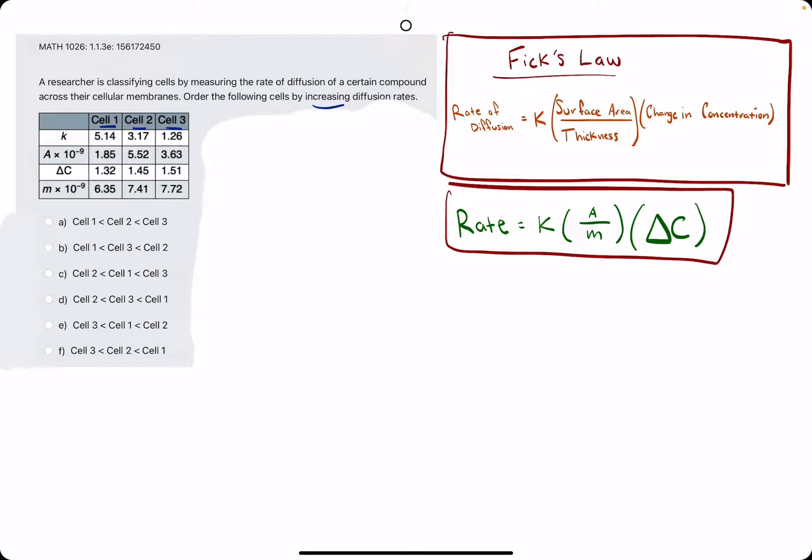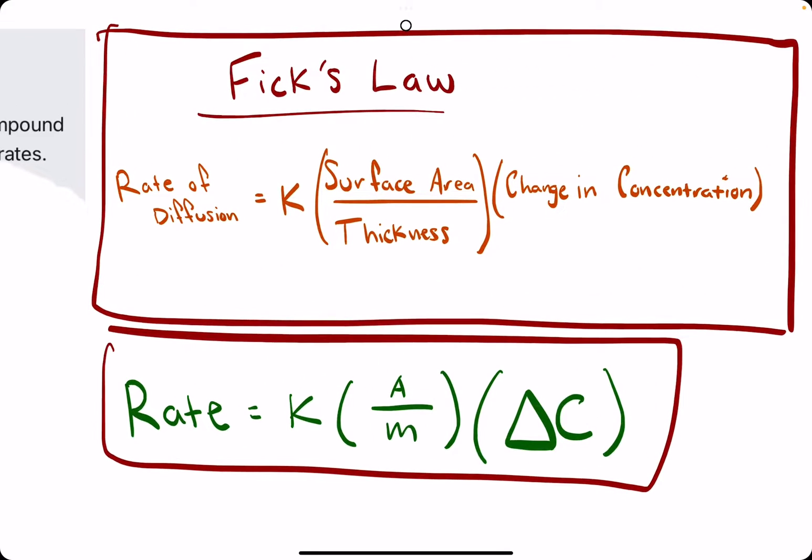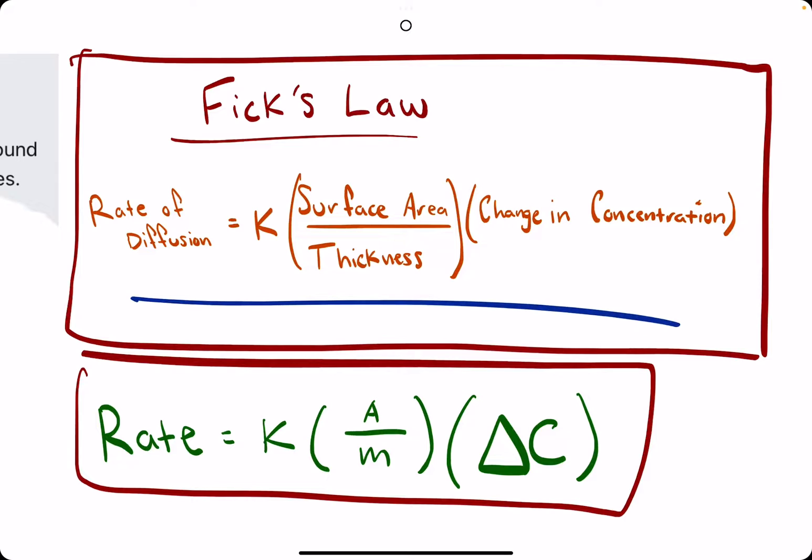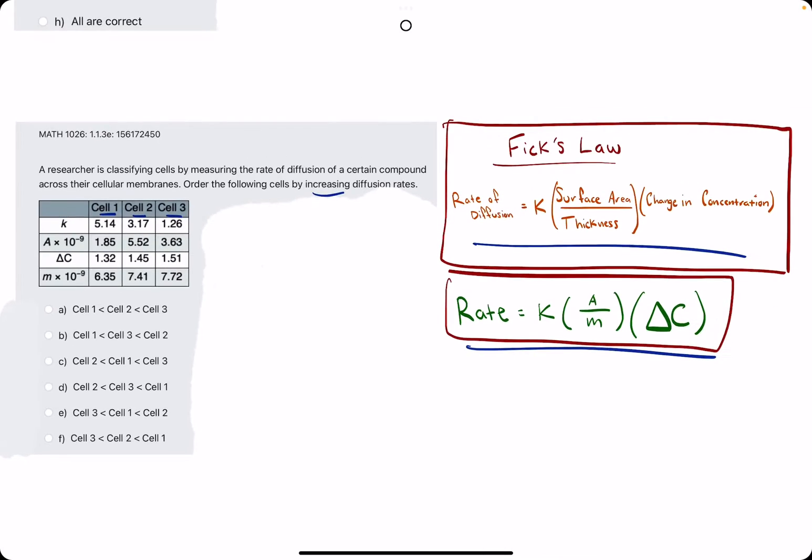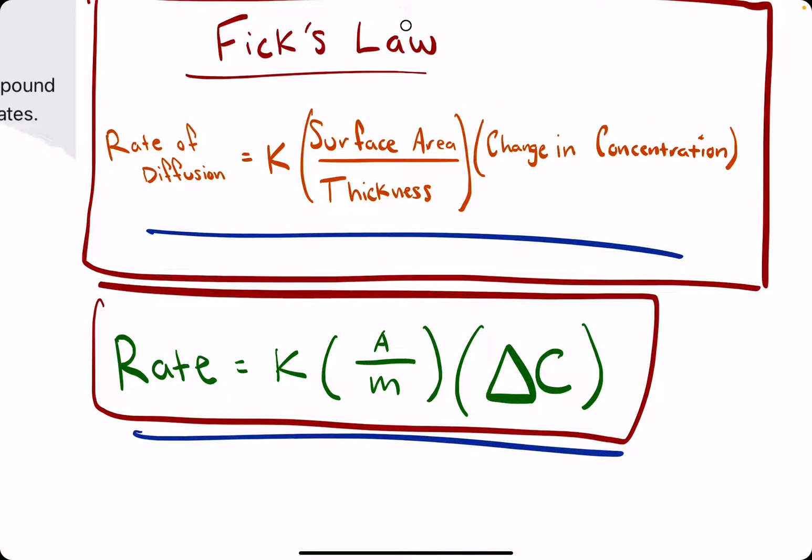Fick's Law, just to have it in a more corresponding format, it's the same thing. We'll call it rate equals K times A over m, the area over the thickness of the membrane, and then change in concentration is represented with this delta C.